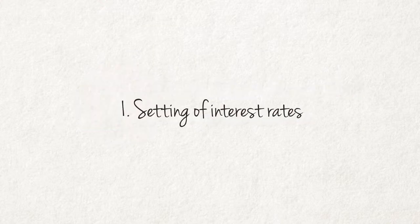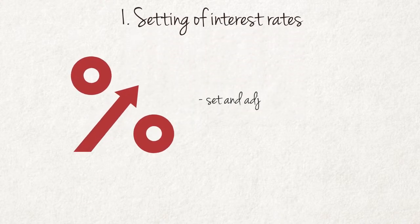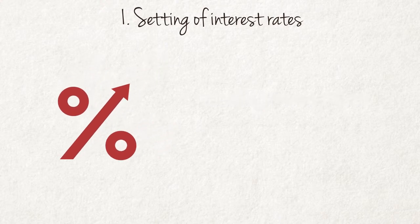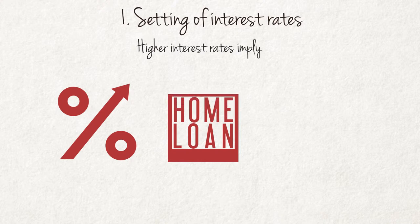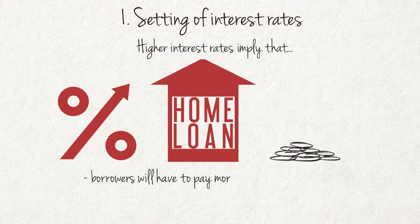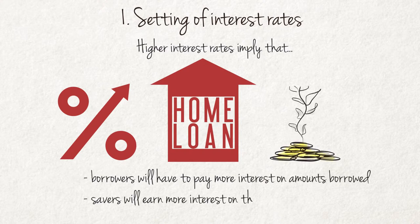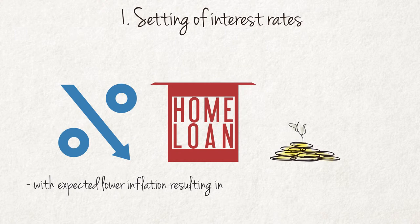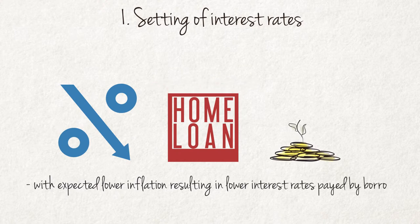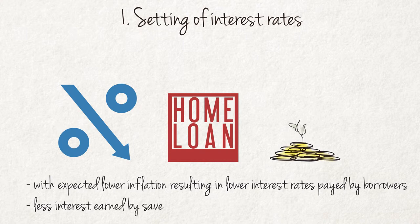Setting of interest rates: Interest rates in South Africa are set and adjusted to contain inflation. If the expectation is that inflation will increase, the central bank will increase interest rates to contain higher expected inflation. Higher interest rates mean that borrowers will have to pay more interest on amounts borrowed, but at the same time, savers will also earn more interest on their savings. The opposite is also true, with expected lower inflation resulting in lower interest rates paid by borrowers and less interest earned by savers. This policy is known as inflation targeting.